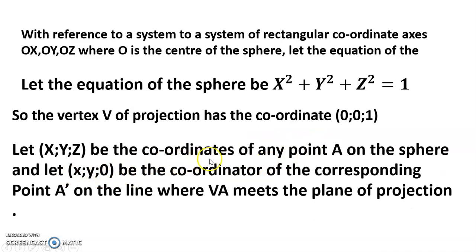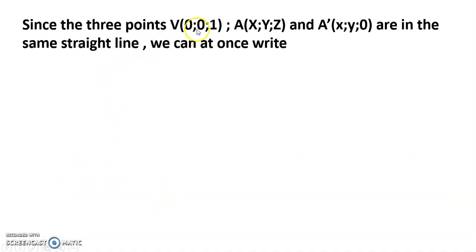Let (x, y, z) be the coordinates of any point A on the sphere, and let (X, Y, 0) be the coordinates of the corresponding point A' on the plane where VA meets it. So the three points V = (0, 0, 1), A = (x, y, z), and A' = (X, Y, 0) are on the same straight line.